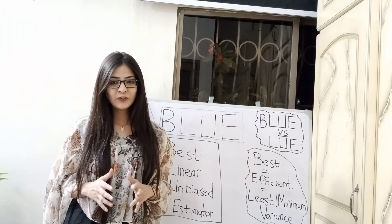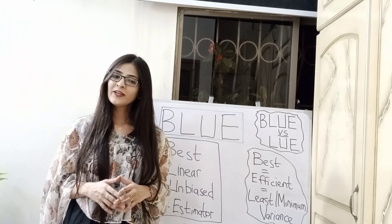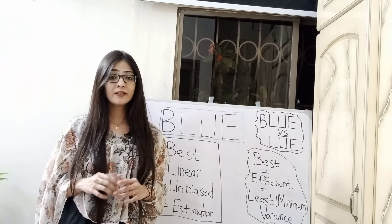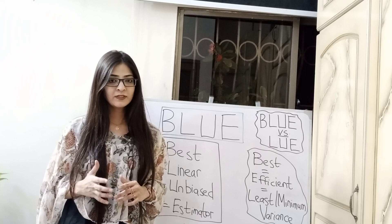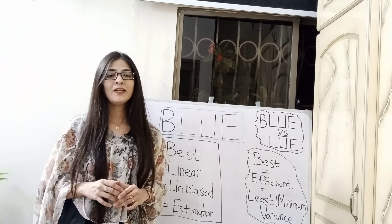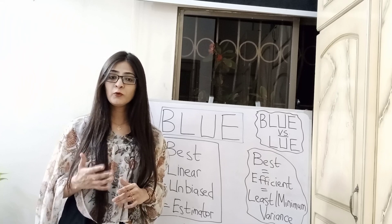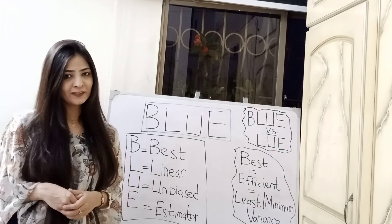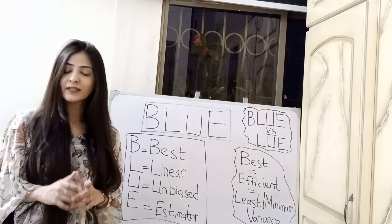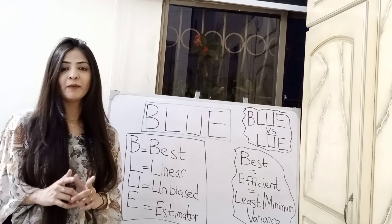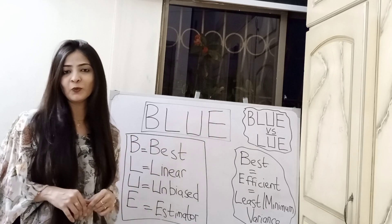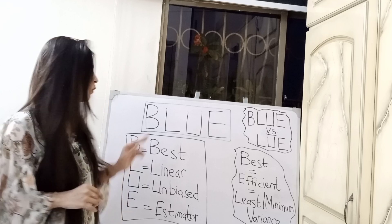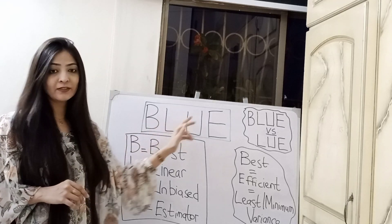Welcome to another short video. We know that OLS is BLUE, and if one of the Gauss-Markov assumptions is violated, then OLS is no longer BLUE. But what exactly do we mean when we say that OLS is BLUE? And more importantly, why does it matter whether or not OLS is BLUE? In this short video, I'm going to quickly explain what each of these letters stands for.